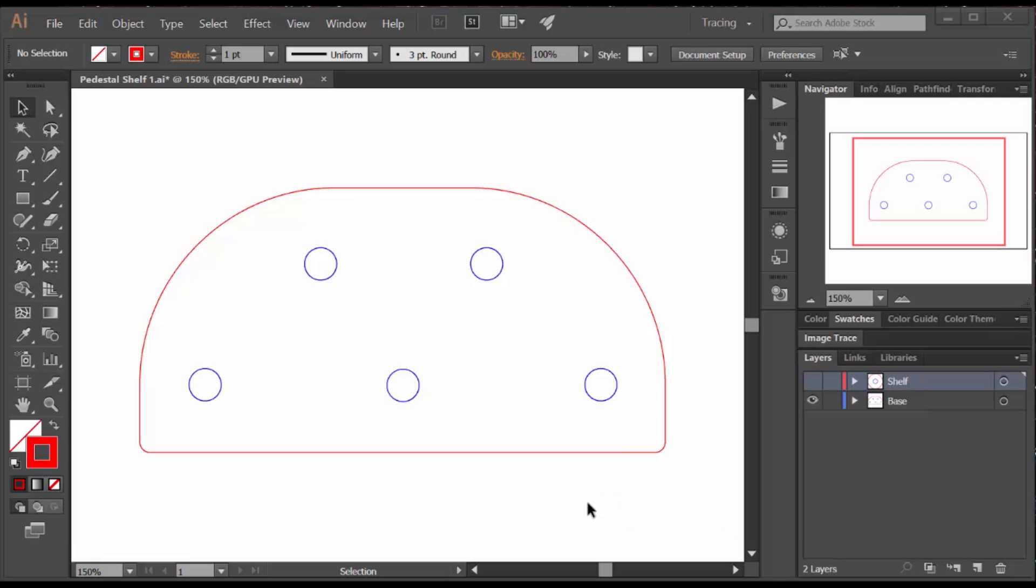So let's start with the simplest design, the pedestal shelves. The blue lines are engraving lines, the red lines are cutting lines, and so I've engraved circles to show me where to put the posts for the different pedestals.